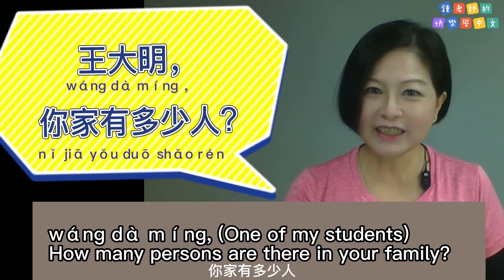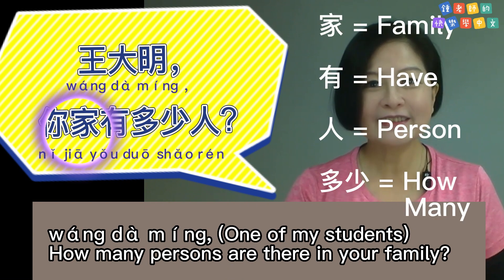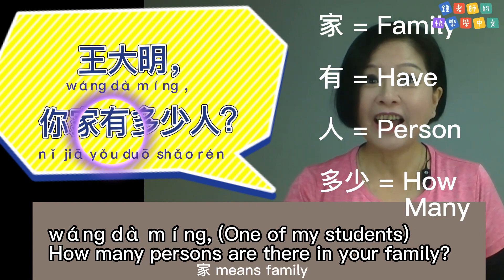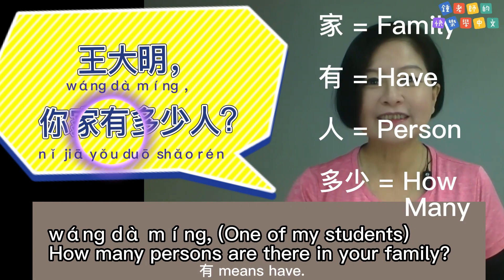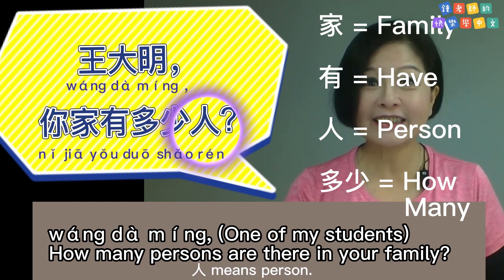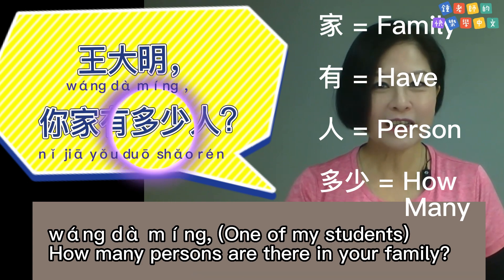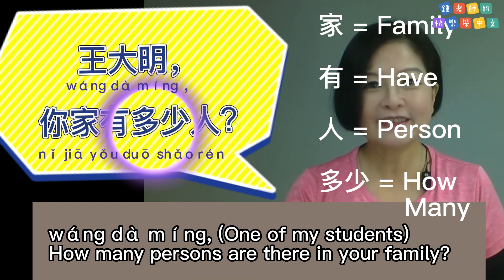你家有多少人? 家 — family. 有 — have. 人 — person. 多少 — how many?